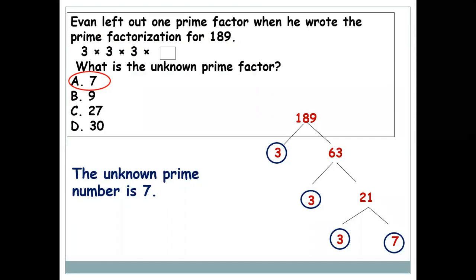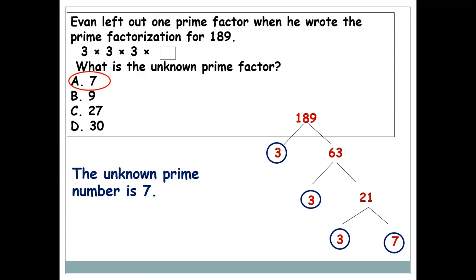This question can be asked another way where you are given the product of a few prime numbers with a missing number to find. For example: Ivan left out one prime factor when he wrote the prime factorization for 189 — what is the unknown prime factor? Do the prime factorization for 189: start with 3 (since 2 is not a factor). 3 × 63, then 3 × 21, then 3 × 7. Written as a product of prime numbers: 3 × 3 × 3 × 7, so the unknown number is 7.